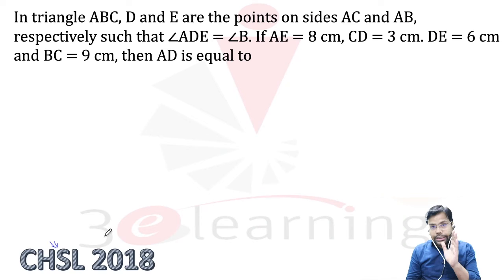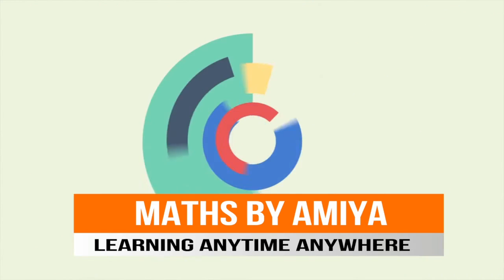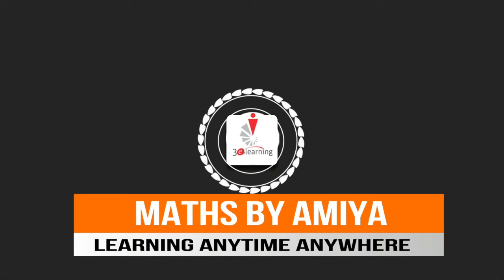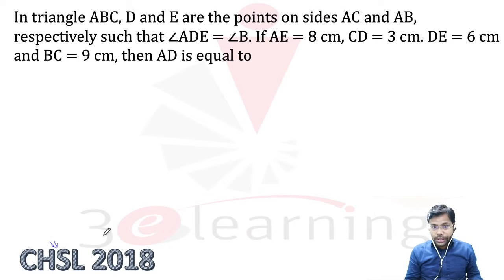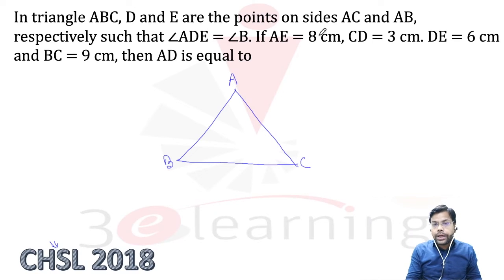Let's start with the solution. I hope you paused and solved the question. This is a question of geometry. First of all, we will make a figure. ABC is a triangle — A, B, C. D and E are points: D is on AC and E is on AB. We need to find angle ADE.